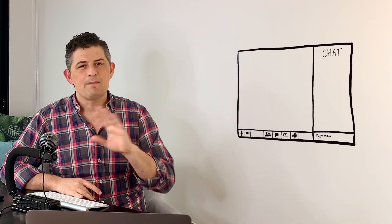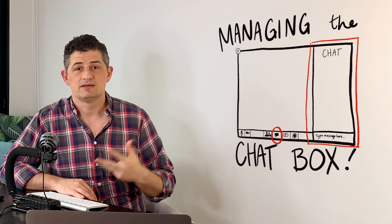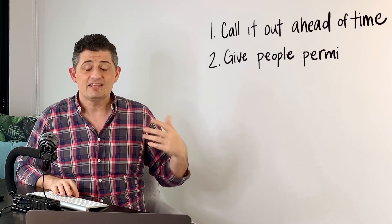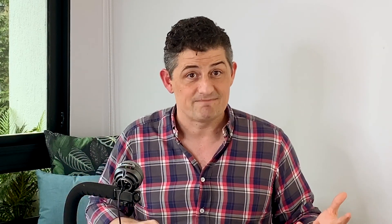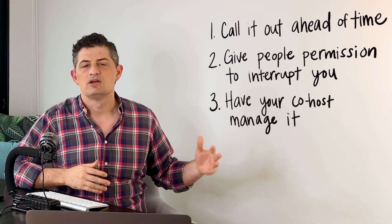Let's talk about the chat box. I'm personally not a huge fan — it's great for sharing files and dropping links, but it comes with downsides. Namely, people start having side conversations that can undermine the main conversation. There are three ways to be smart about it. Tip one: call it out ahead of time — say 'let's try to keep the conversation in the main area, please don't use the chat box for side conversations.' Tip two: give people permission to interrupt you — if they feel like they can't get a word in they'll use the chat box, but if they know they can just unmute and say 'hey, can you stop real quick? I have a question,' then they'll do that. Tip three: have your co-host monitor the chat and gently redirect people back to the main conversation.